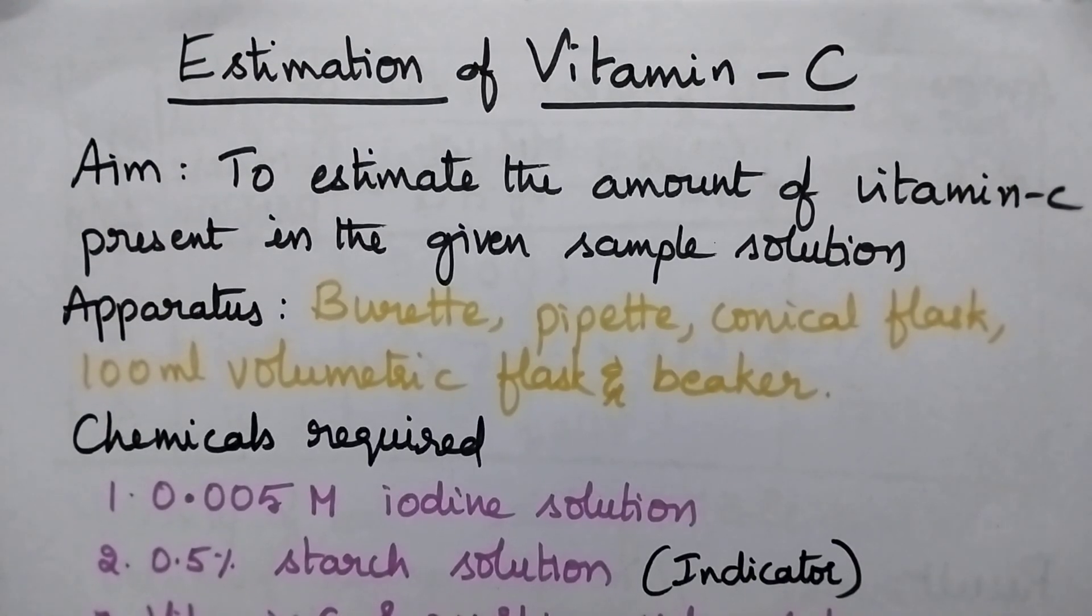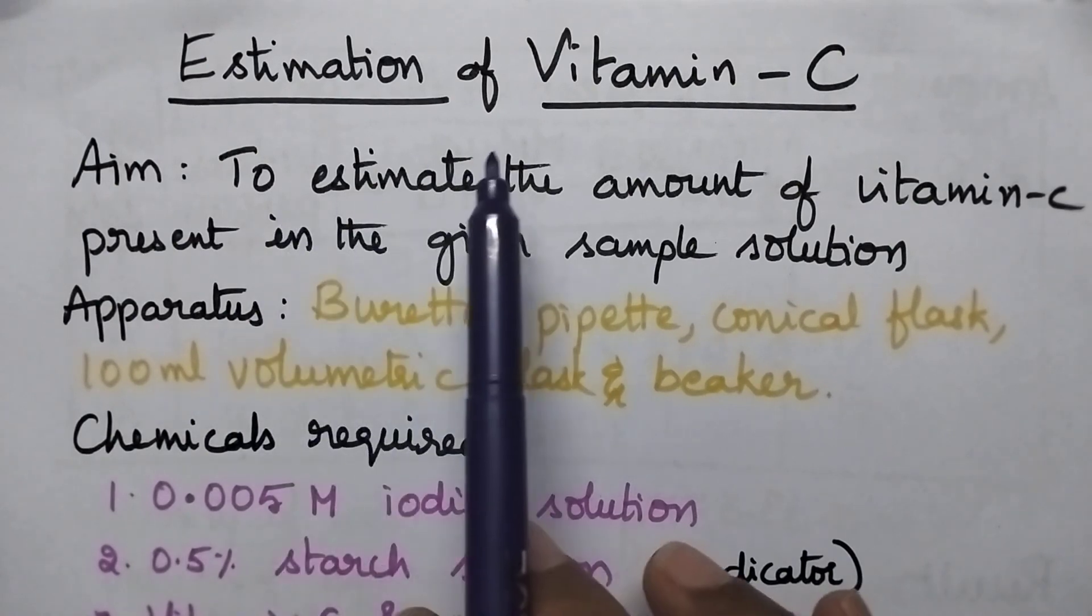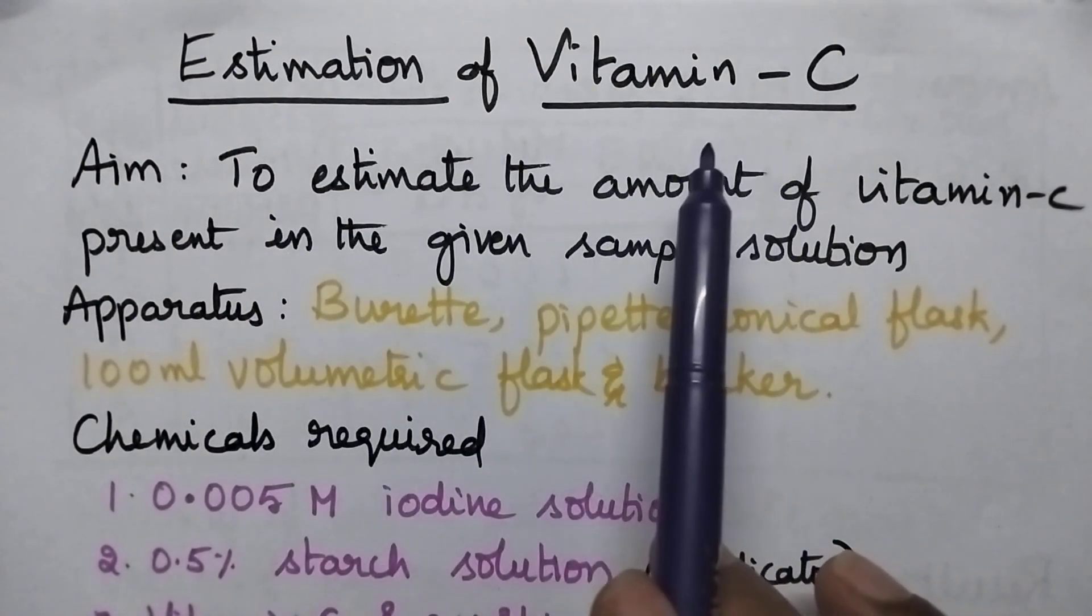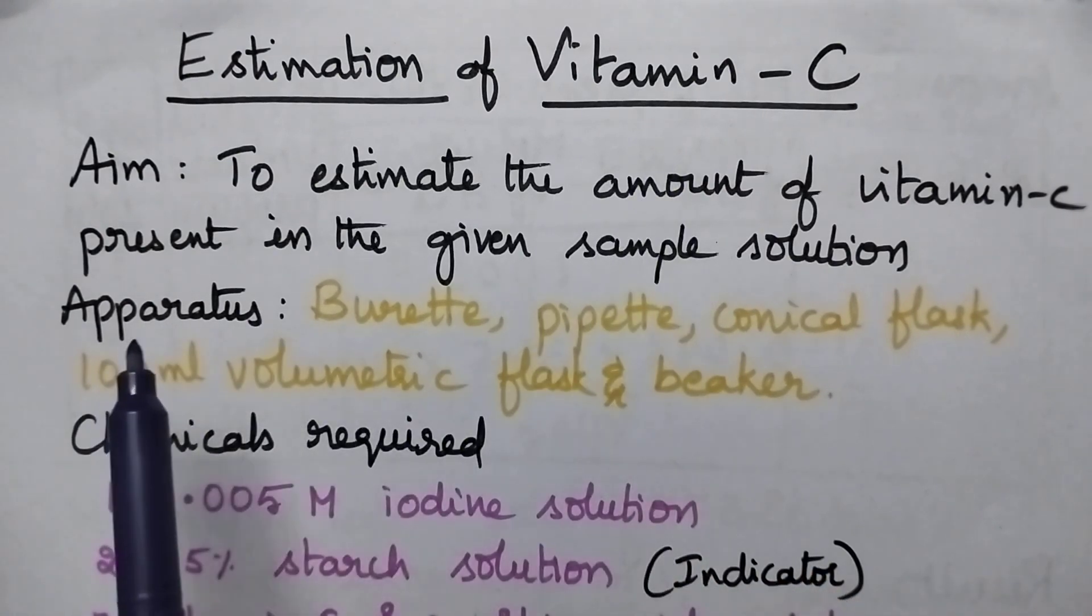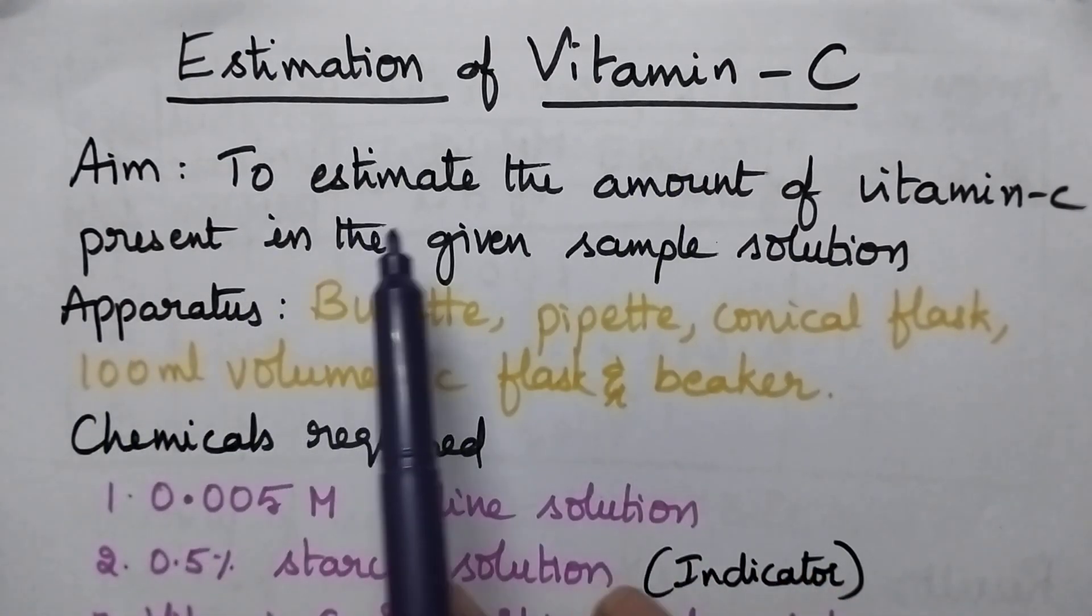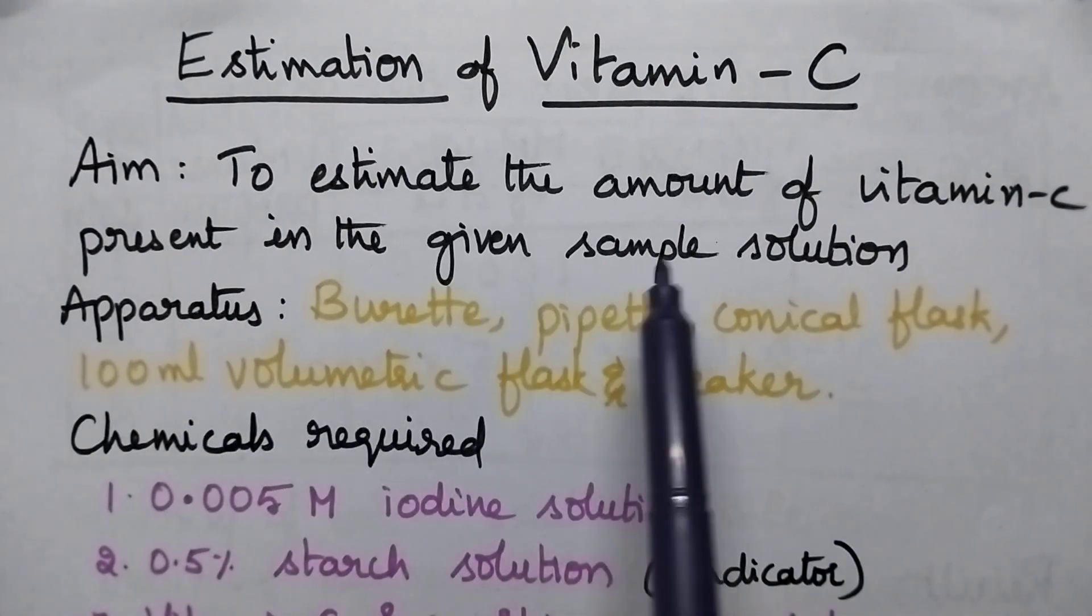Hello students, welcome back to my channel. In this video I am going to discuss in brief about the estimation of vitamin C. Vitamin C is also known as ascorbic acid. The aim of the experiment is to estimate the amount of vitamin C present in the given sample solution.